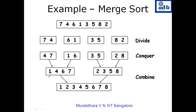The merge function starts at the left endpoint of the two sorted sequences. We compare these two numbers — whichever is smaller, we write it into another array and move the corresponding pointer to the right. So if one is smaller than two, we write one into the array and move the corresponding pointer to the right. Now we compare two and four. Since two is smaller, we write two and move the pointer to the right.